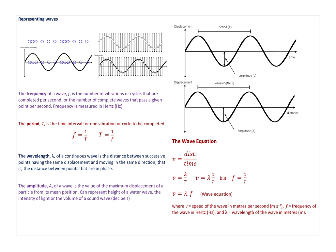The first key term is frequency, given the symbol f — the number of vibrations or cycles completed per second, or the number of complete waves passing a given point per second. Frequency is measured in hertz (Hz). For sound, our ears can detect frequencies between 20 and 20,000 Hz. Middle C in music is 256 Hz. Pitch is basically another word for frequency in the context of sound waves: a high-pitch sound has a high frequency, and a low-pitch sound has a lower frequency.